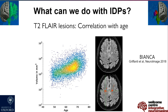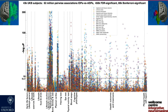In our last abstract, we showed a Manhattan plot with 62 million pair-wise correlations between all IDPs and non-IDPs. As shown, 80,000 of them are Bonferroni significant.